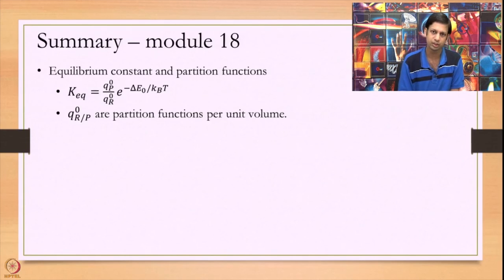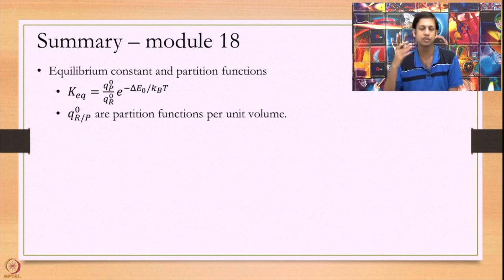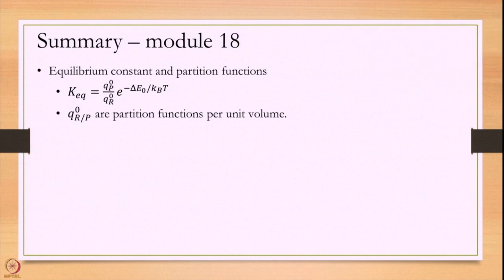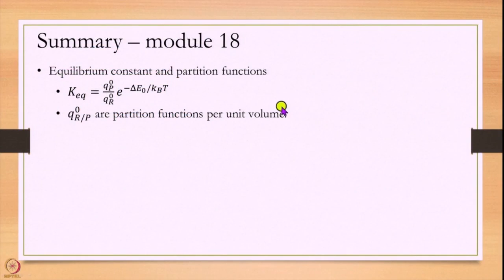In summary, today we have looked at the relation of the equilibrium constant in terms of partition functions. This is the formula we derived today — a more rigorous version can be found in Atkins. These partition functions are per unit volume and, if working in molar units, also divided by Avogadro's number. Thank you very much.